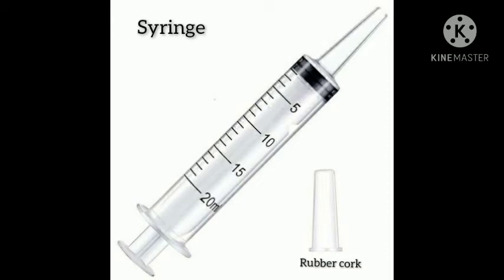There is a small activity on the gaseous state. Take 100 ml syringes and close their nozzles with rubber corks. Remove the pistons from all the syringes. Leaving one syringe untouched, fill water in the second and pieces of chalk in the third. Insert the pistons back into the syringes — you may apply some Vaseline on the pistons for smooth movement. Now try to compress the contents by pushing the piston in each syringe. We observe that gases are highly compressible as compared to solids and liquids.